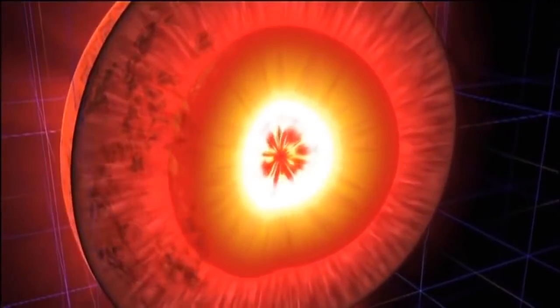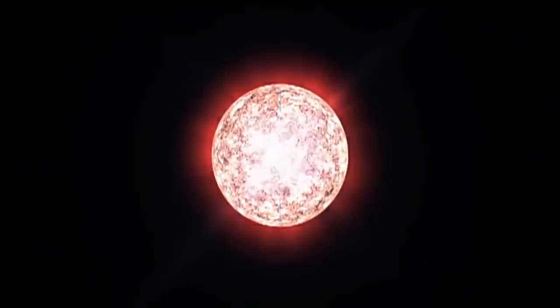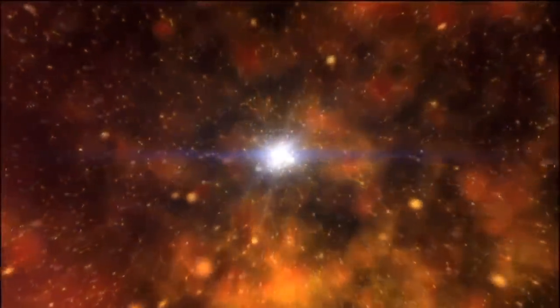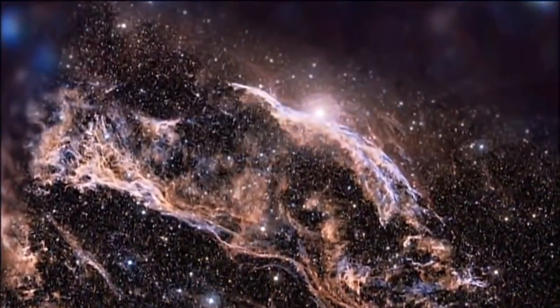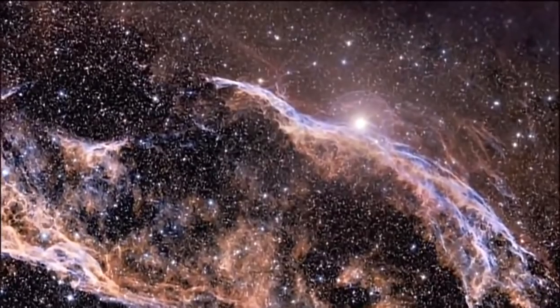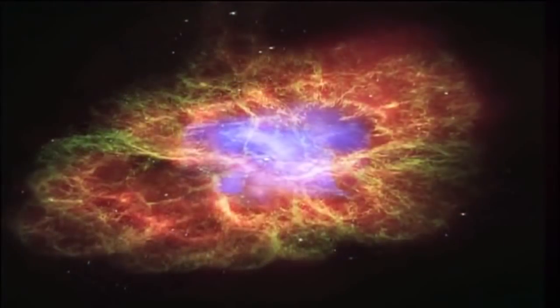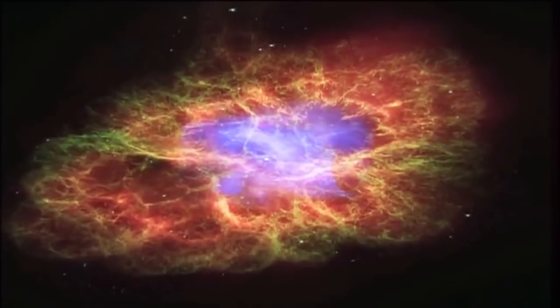In some cases, as matter slams into the star's core, the impact creates a powerful shock wave that races back out and literally blows the star apart. Our galaxy is littered with the scattered remains of these supernovae, as shown in images like these from the Hubble Space Telescope.